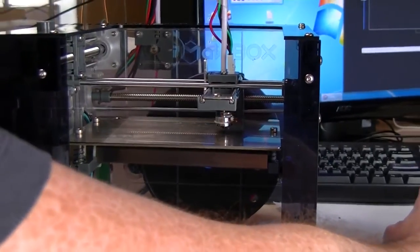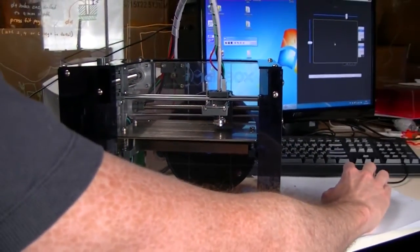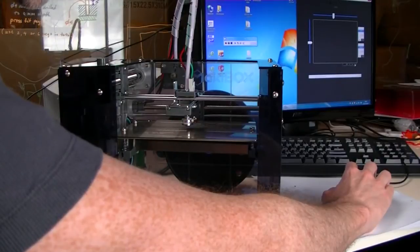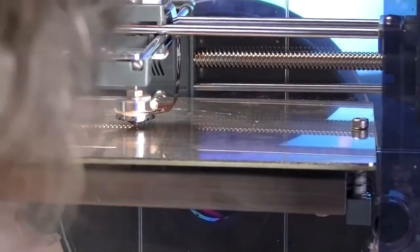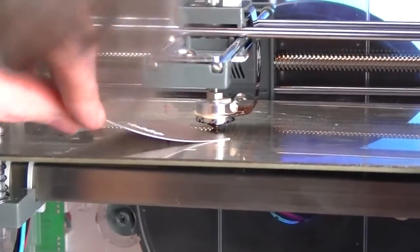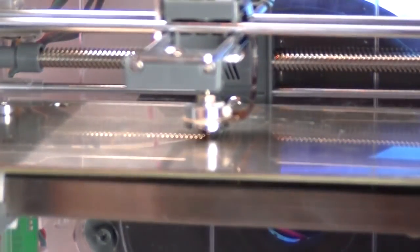Now to check and make sure that everything's consistent, what we do is we go into the middle and home it. And this will also help you check to see if your bed's a consistent height all the way across, or if you need to worry about bowing or anything like that. So now we've got the head at three points plus the middle at basically the same height, about the thickness of a business card.